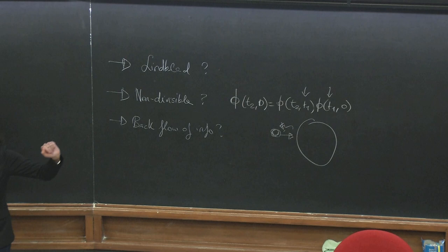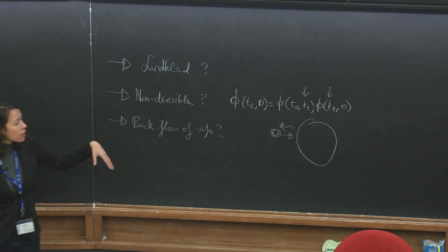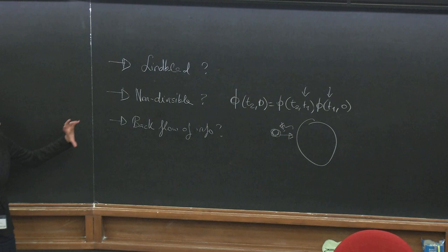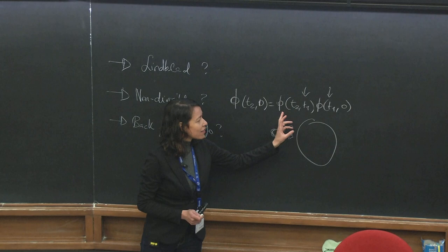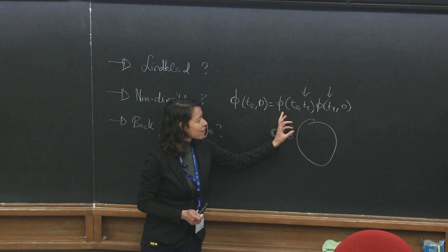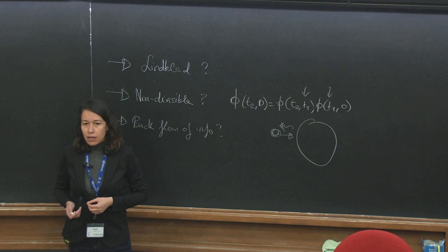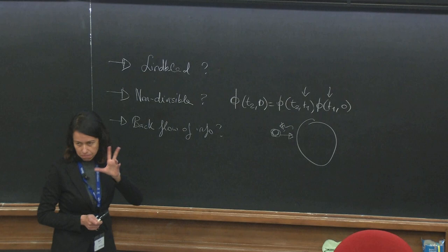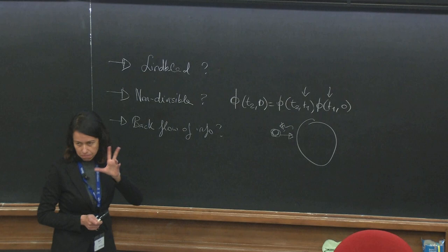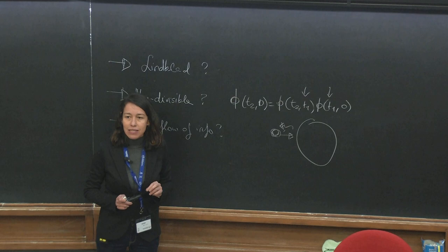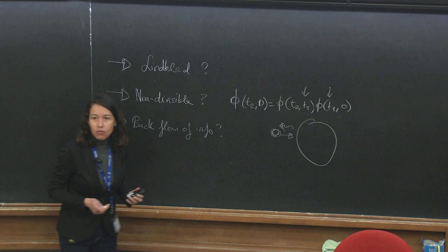You have the same name for three different things. People then try to see the relationship between these concepts. The best thing to keep in mind is that non-Markovian environments have a certain memory, and because they have memory there can be some backflow of information, because the environment actually remembers. In connection to this, the fact that you can divide the map into pieces means that somehow the environment is recovering well from the interaction with the system — a good approximation to consider that from one piece of time to the next, the environment has returned to its equilibrium state.